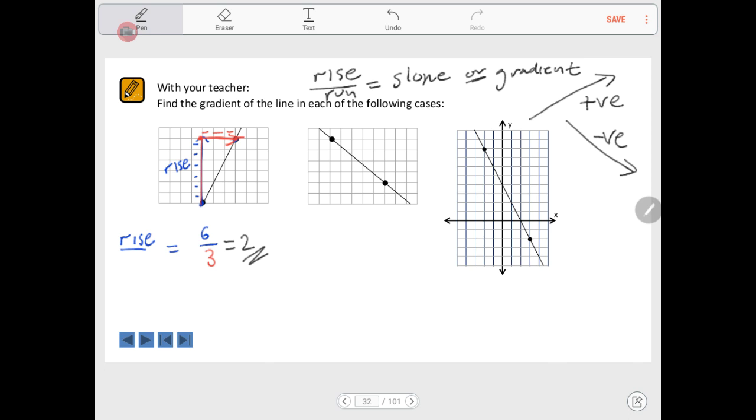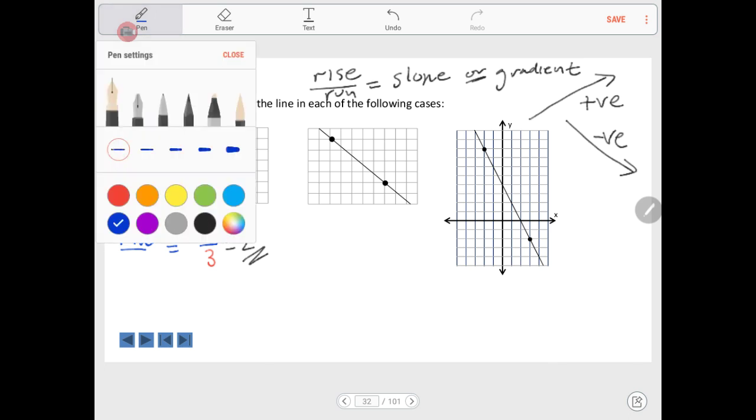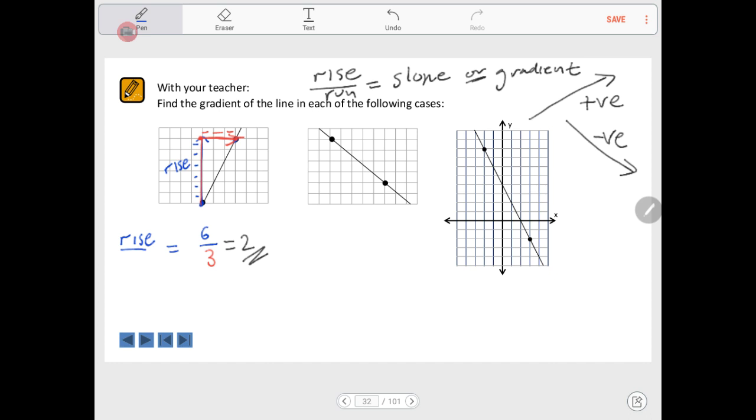Right, so if you did pause the video, watch closely and see if you got the right answer. One thing that is different here is that these lines slope down to the right. The first one slopes up to the right, giving a positive gradient of two, but these slope down to the right, so they'll end up with negative values. If you got positive values, you may want to pause and rethink what you did.